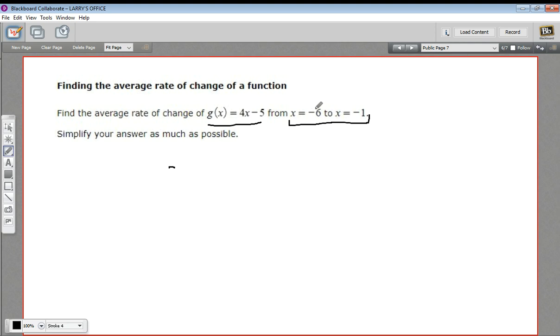You take, let's call this x1, and we'll call this x2 for our two x values. You take the function value at x2 and subtract the function value at x1. So basically, that's the difference in the y-coordinate for these two points.